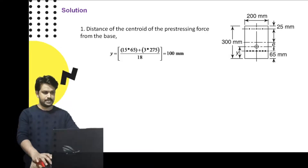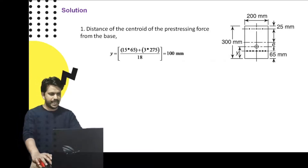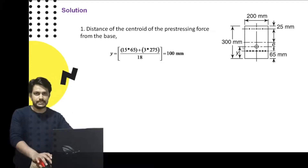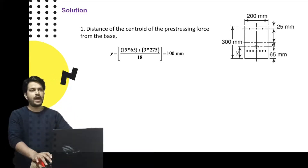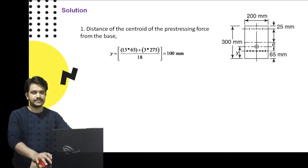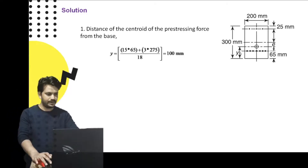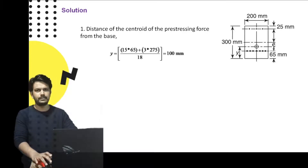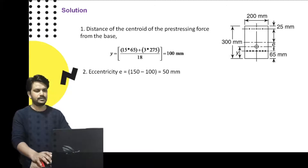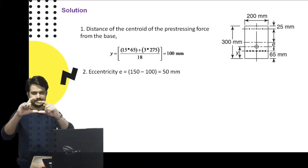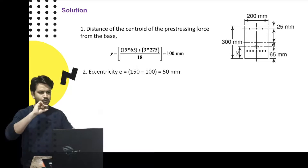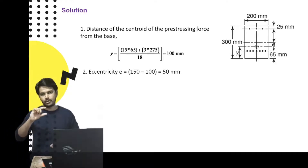The given cross-section is rectangular, so Y-bar is at the mid-depth, meaning the neutral axis lies at 150 mm from the bottom. The resultant pre-stressing force is at 100 mm from the bottom. So the eccentricity of the cable is 150 - 100 = 50 mm.